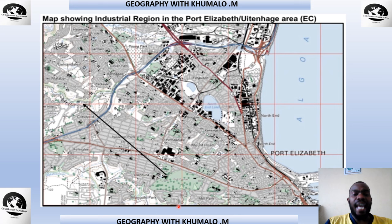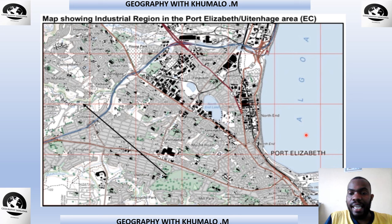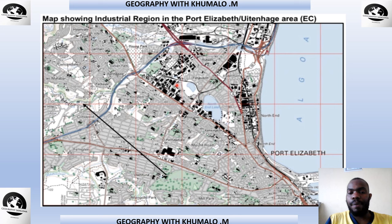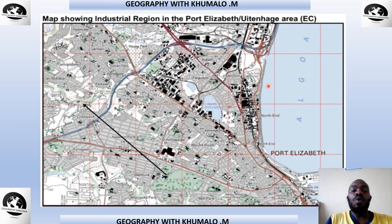For map work on the Port Elizabeth/Uitenhage region, if you have a topographic map, you will see an ocean indicating where the harbor is — one of the key factors influencing the location of this industrial region. You will also see roads for transportation, settlements indicating the pool of skilled and unskilled labor, flatland, and raw materials. You must be able to locate these factors on a topographic map.